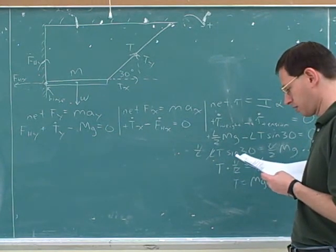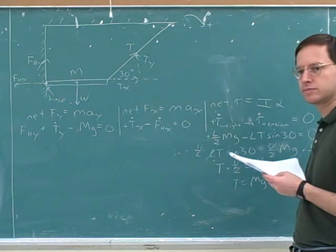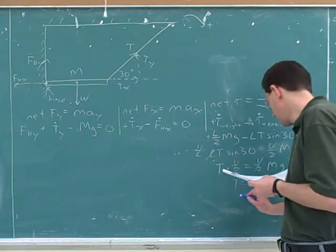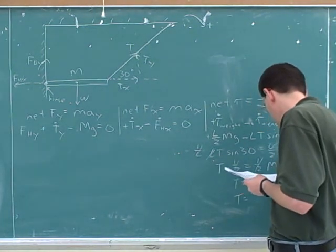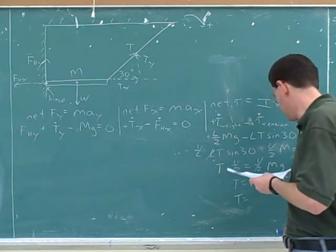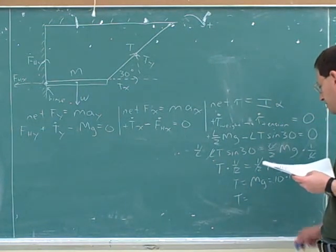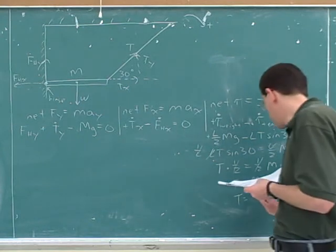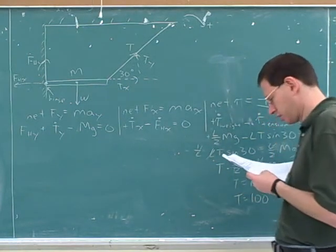T is equal to MG, and I did it because it's 100. Right. So they said the mass was 10 kilograms, and your instructor is going to let you use 10 for G. So what's the answer? 100 newtons.